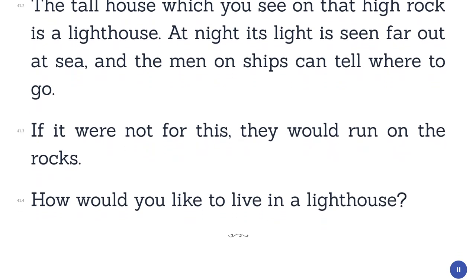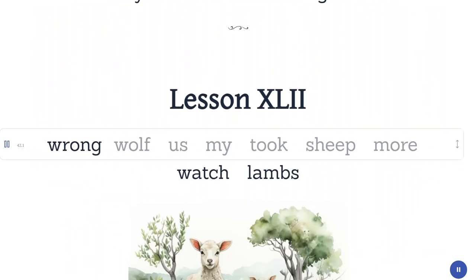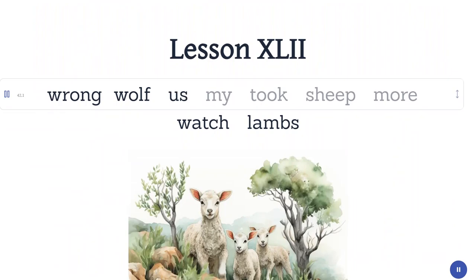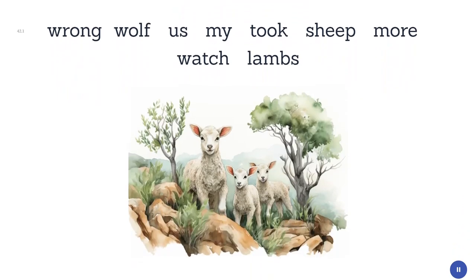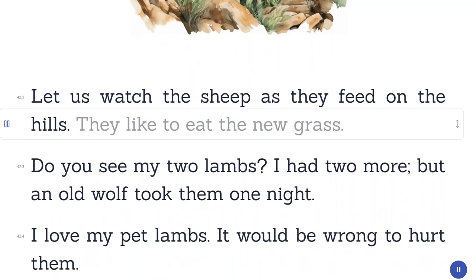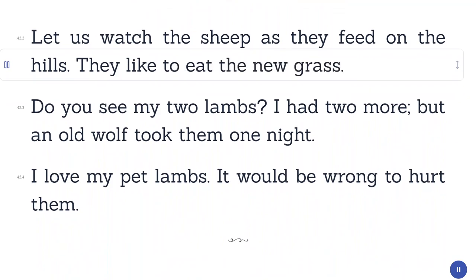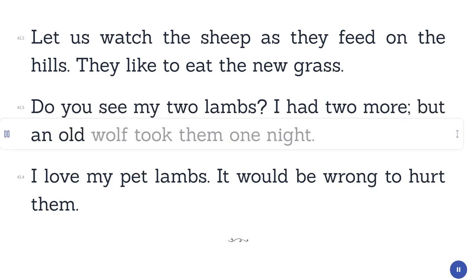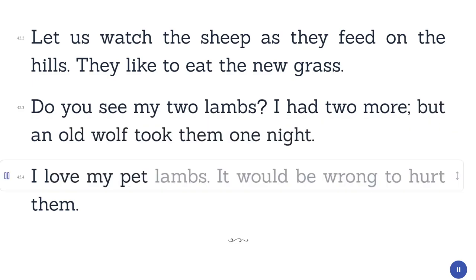Lesson 42. Wrong. Wolf. Us. My. Took. Sheep. More. Watch. Lambs. Let us watch the sheep as they feed on the hills. They like to eat the new grass. Do you see my two lambs? I had two more, but an old wolf took them one night. I love my pet lambs. It would be wrong to hurt them.